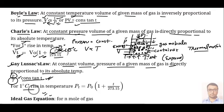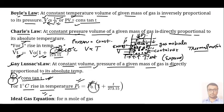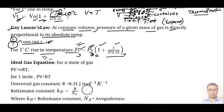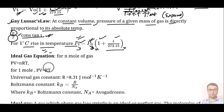For 1 degree Celsius rise in temperature, the pressure can be calculated as: P_T = P₀ × (1 + T/273.15), where P_T is the final pressure at temperature T and P₀ is the initial pressure.